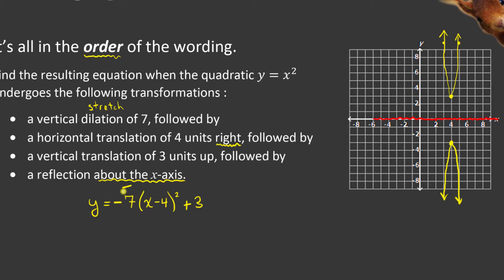So I'm going to have to multiply the entire equation by that negative 1, which gives me a resulting equation of negative 7, x minus 4 squared, minus 3, which kind of makes it look like my vertex went down.